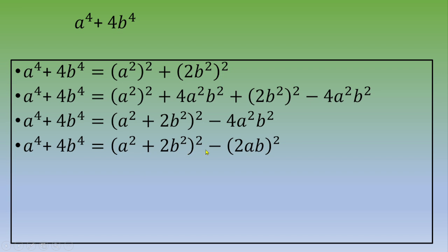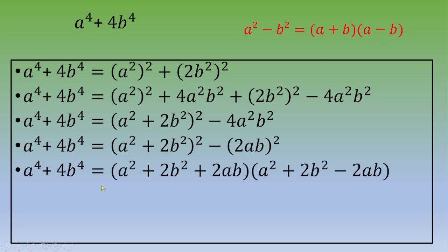So now we can apply this remarkable identity: a squared minus b squared equals a plus b times a minus b. And this is a squared plus 2b squared plus 2ab times a squared plus 2b squared minus 2ab.